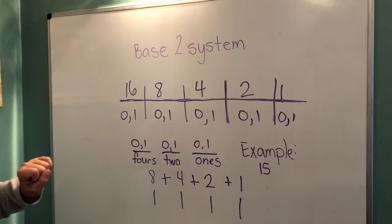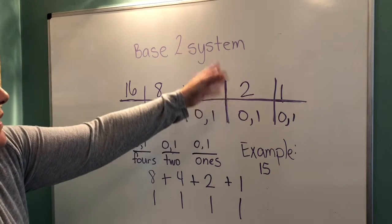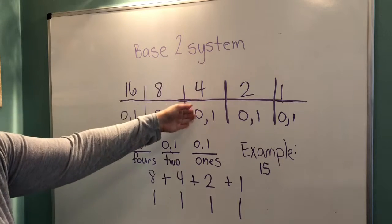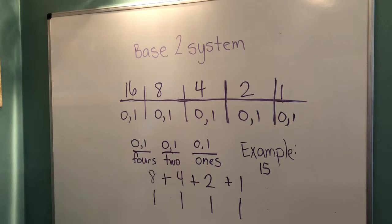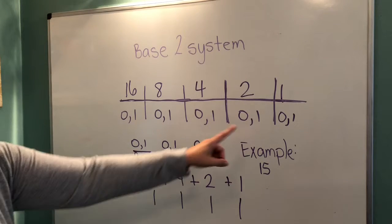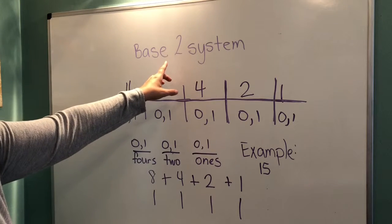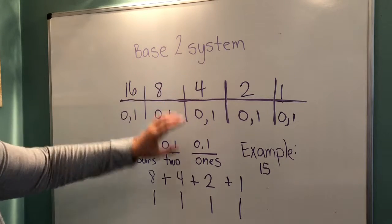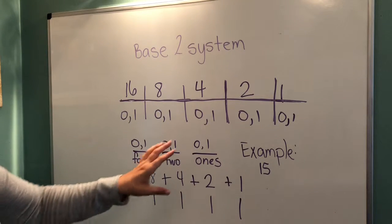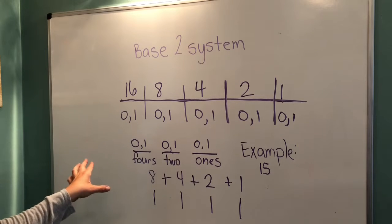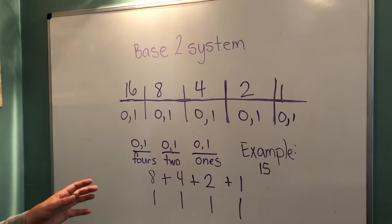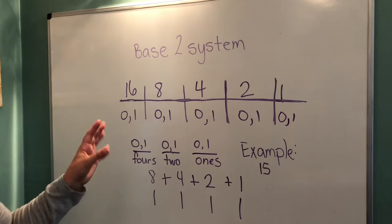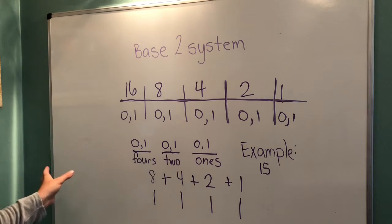In the base 2 system, you do something similar. You start with the 1s place, times 2 is the 2s place, times 2 is the 4s place, times 2 is the 8s place, and times 2 is the 16s place, and so on. We use the digits 0 and 1. It's always 1 less than the base system number because we don't actually ever reach 2. Once we do, we roll over to the next place value. And, as you remember, in the base 10 system, we use the digits 0 through 9. Once we reach 10, we roll over to the 10s place, and so on. You roll up.